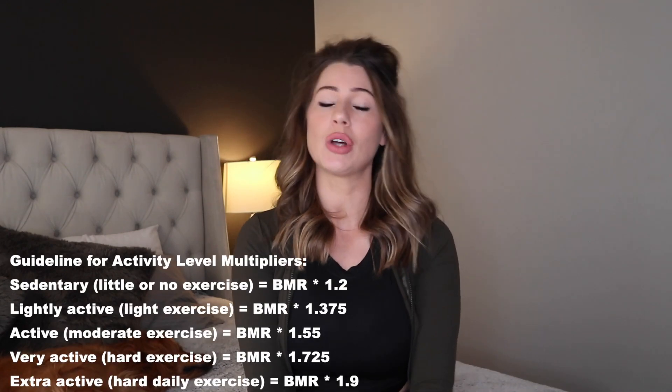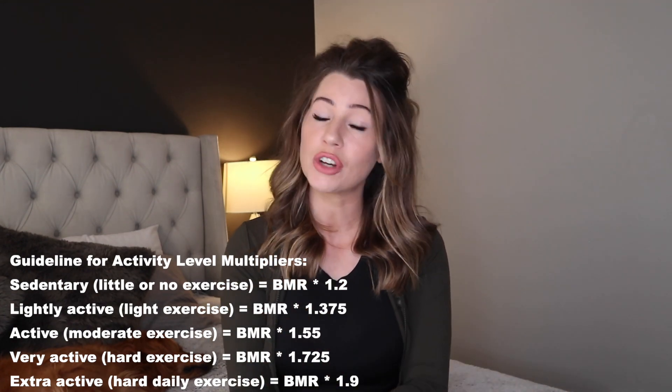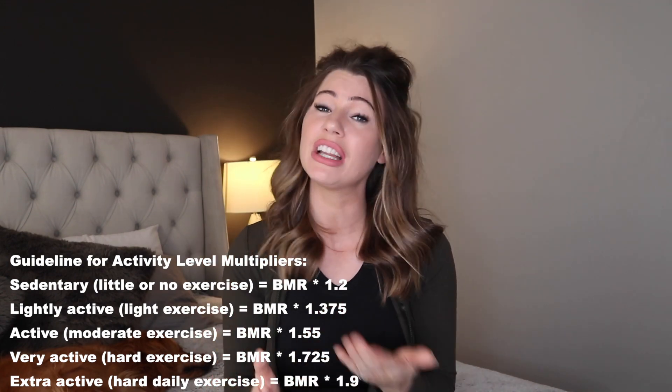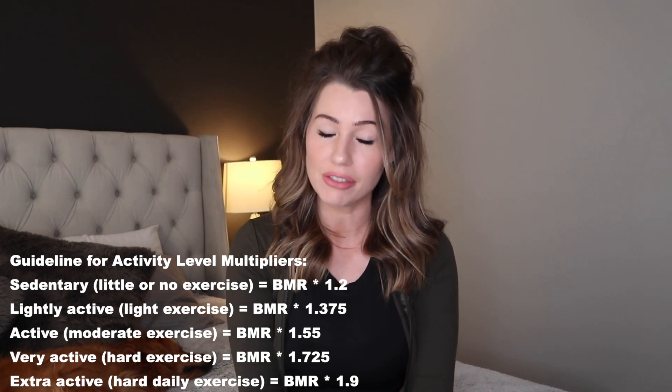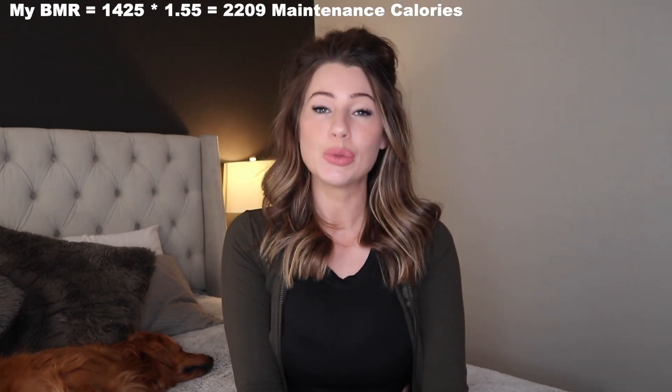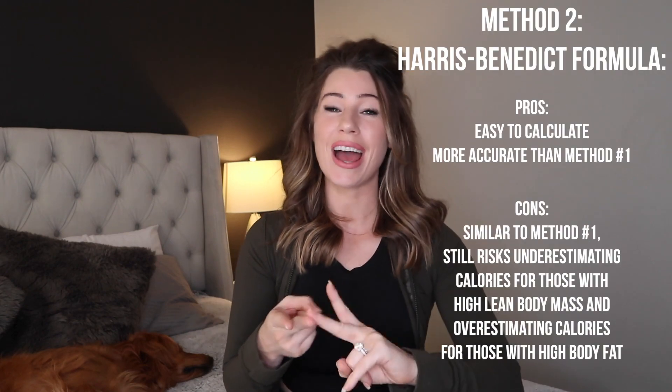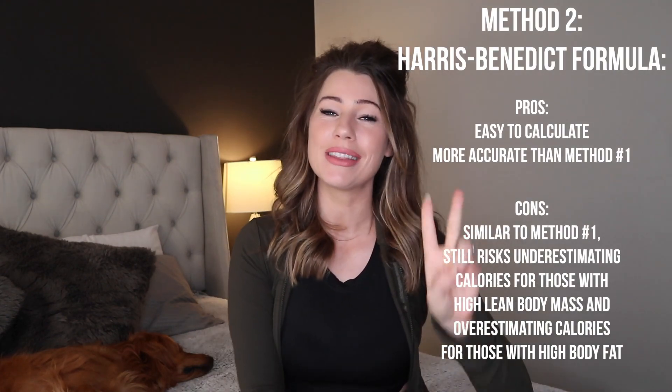Once you have your BMR, you take into account your activity level using standard multipliers. In my case, I'll use 1.55 for moderately active. Taking my BMR and multiplying by 1.55 results in 2,209 calories per day. This is my TDEE — total daily energy expenditure — the amount of calories my body needs to maintain my current body weight given my age, height, weight, and activity level.